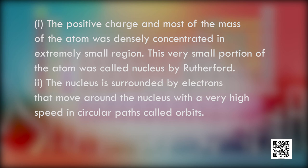The nucleus contains the positive charge and all the mass. The nucleus is surrounded by electrons that move around it with very high speed in circular paths called orbits. Rutherford's model of the atom resembles the solar system — the nucleus is like the sun and the electrons are like the planets, held together by electrostatic forces of attraction.